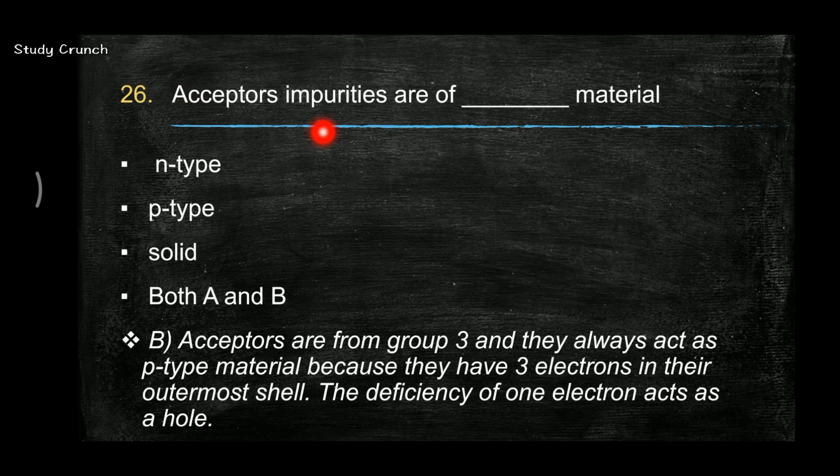Next, acceptor impurities are of which material? Out of these four, the answer will be P type material. We know that acceptors are from group number 3 and they always act as P type material because they have three electrons in their outermost shell. So the deficiency of one electron acts as a hole.